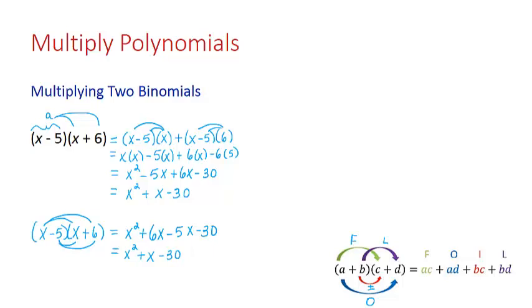Again, that only applies to two binomials that you're multiplying together. But again, what we're doing is distributing everything in the first times everything in the second.